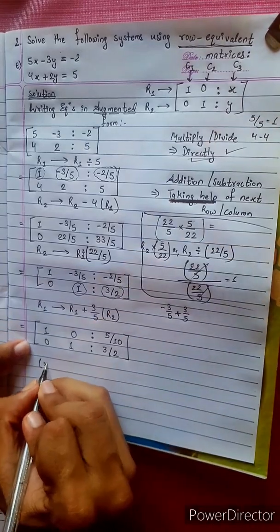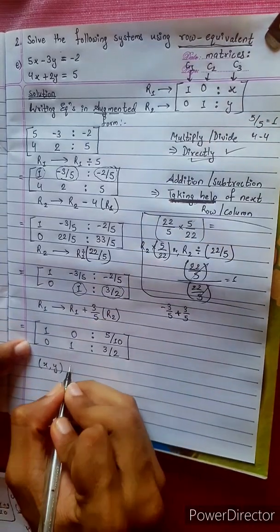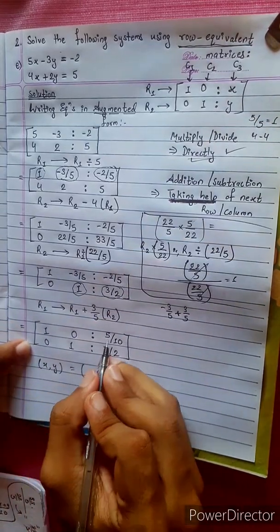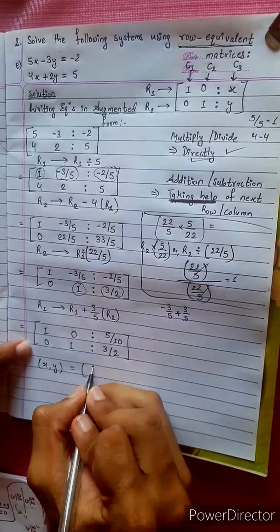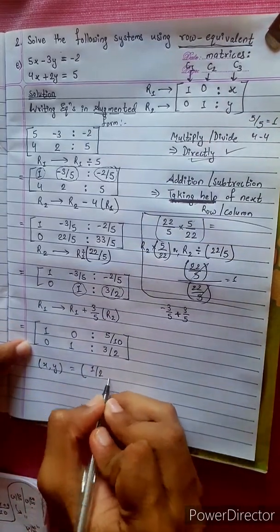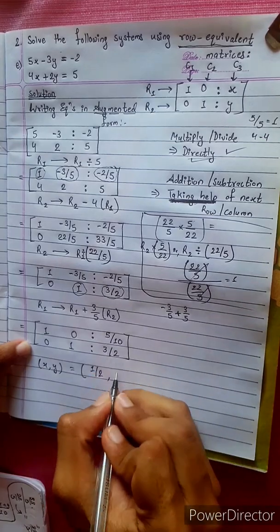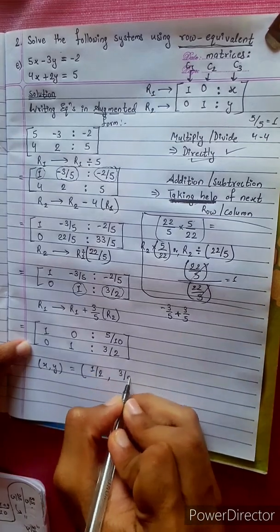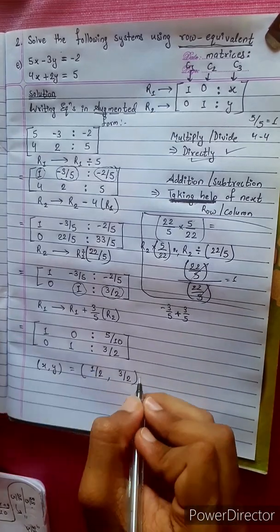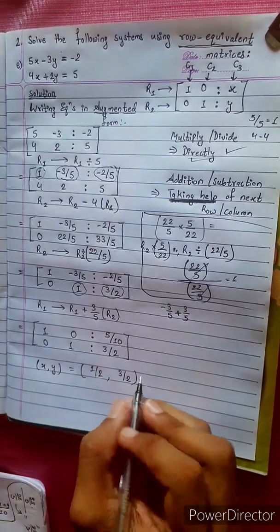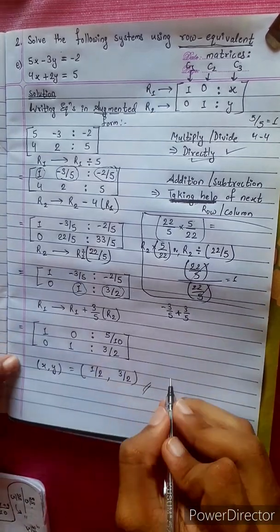So the solution is: x comma y equals the values 1 and 3 by 2. That gives us 3 by 2, and we circle the answer.